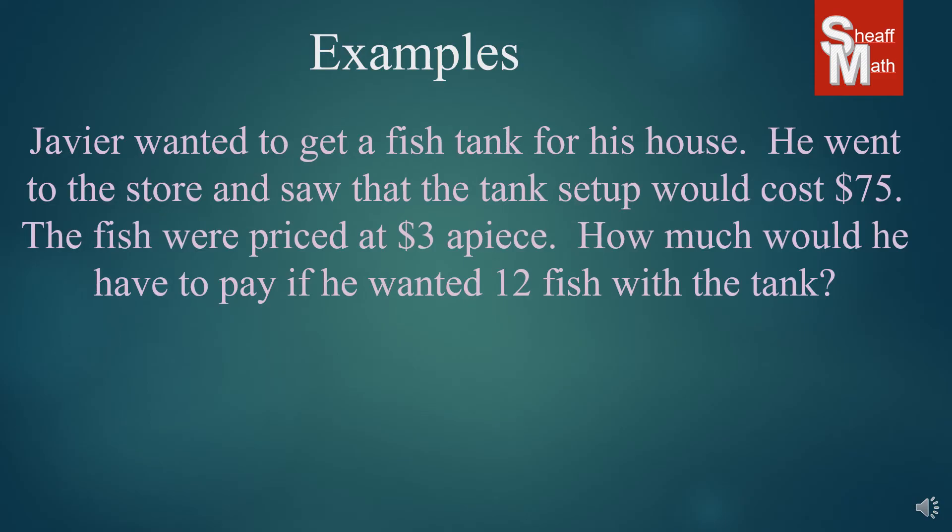Okay. Our next one, Javier wanted to get a fish tank for his house. He went to the store and saw that the tank setup would cost 75 bucks. The fish were priced at $3 a piece. How much would he have to pay if he wanted 12 fish with the tank? Well, which number here is causing the price or value to either go up or down? Well, we know he has to buy the tank, right? He has to buy the tank because he's getting this fish tank full of fish, hopefully. But which number is causing the price to rise? Well, it depends on how many fish he buys. And so $3 a piece, anytime you see $3 a piece or $3 per whatever, that is going to be your rate of change.